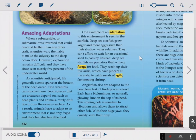Anglerfish are also adapted to the Herculean task of finding scarce food. Herculean means it's a great task, it's an enormous task. Each has a bioluminous or naturally glowing lure on the top of its head. The shining pool is sensitive to vibrations and allows them to attract other fish. With their huge jaws, they quickly seize their prey.